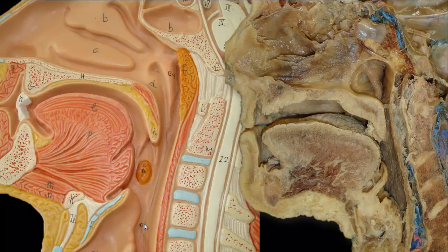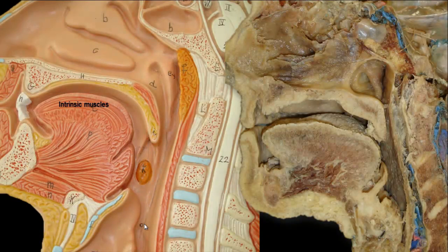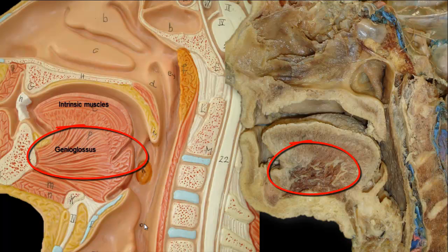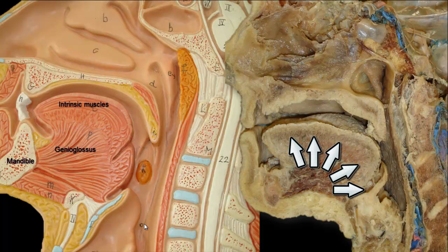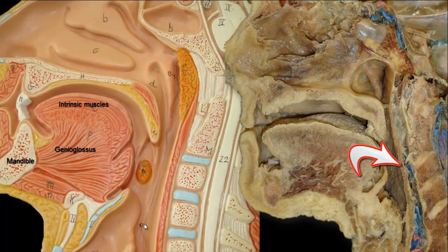In the mouth, the tongue has extrinsic and intrinsic muscles. The intrinsic muscles change the shape of the tongue, while the extrinsic muscles alter both the position and shape of the tongue. Genioglossus is the bulkiest extrinsic muscle of the tongue. It arises from the mandible, and its fibers fan out to be inserted into the whole length of the tongue. Genioglossus protrudes the tongue when it contracts. When genioglossus is paralyzed, the tongue has a tendency to fall posteriorly, obstructing the oropharynx with a risk of suffocation.